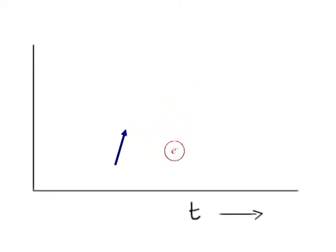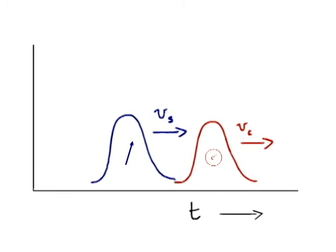Some examples are Luttinger liquids in one dimension, in which the spin and charge of the electron get separated and move with different velocities. This has in fact been observed in nanowires and carbon nanotubes.